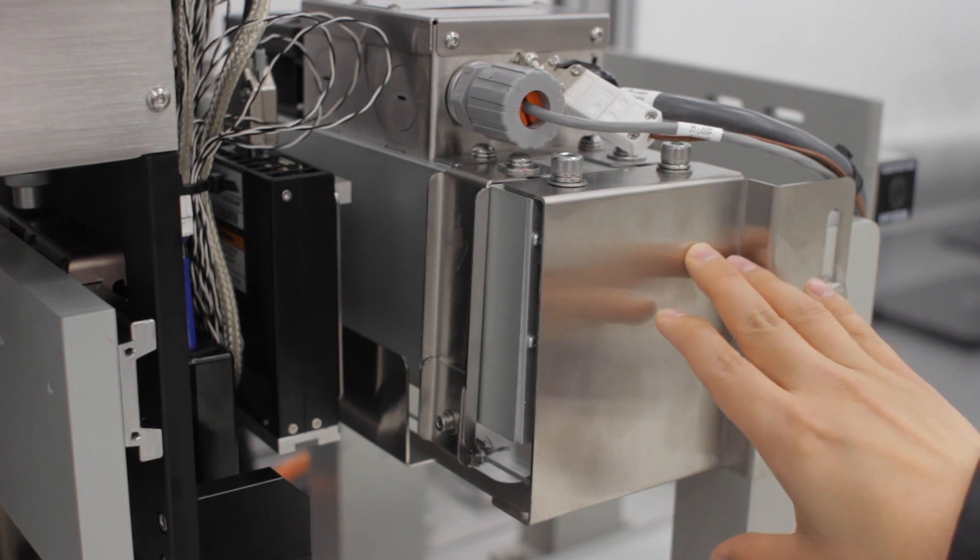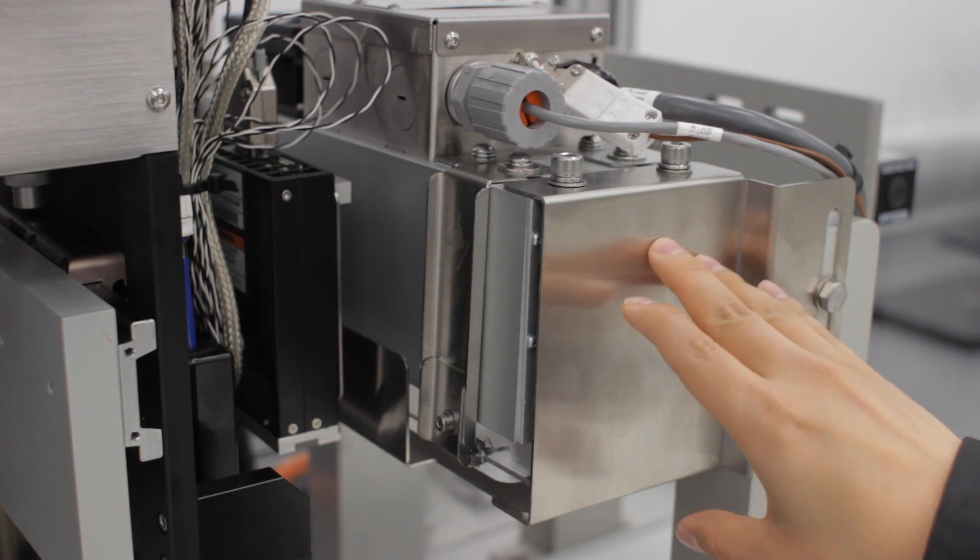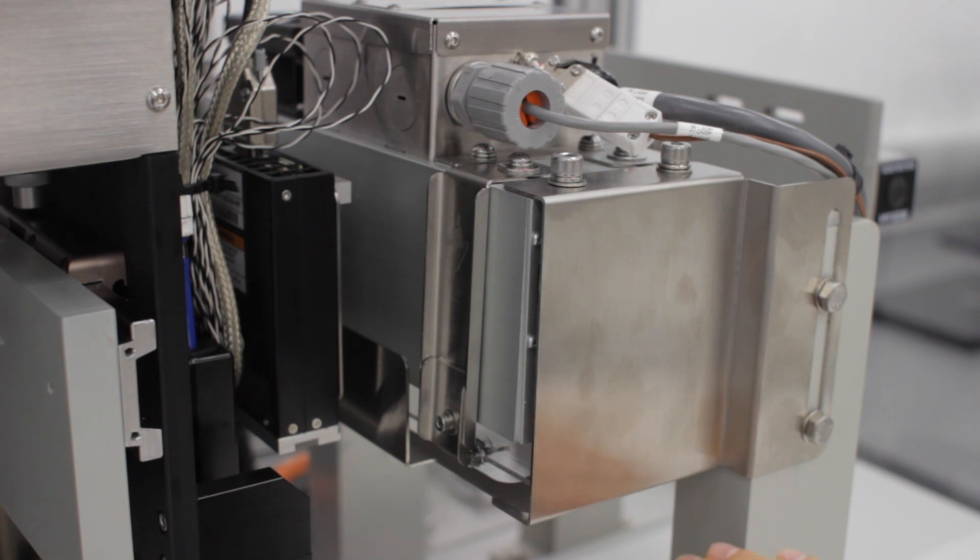And then right next to the UV lamp, we have the IR. This IR is very powerful. It generates a lot of heat so that we can do high temperature processing of the ink that we put down, or we can also drive off some of the solvent.